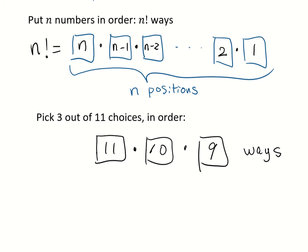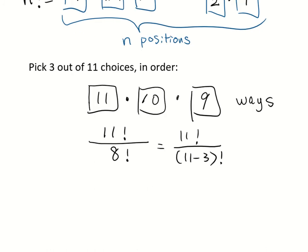Representing this using factorial is 11 factorial divided by 8 factorial. Well, here the 8 factorial, let's write it as 11 minus 3. This actually defines what permutation is.